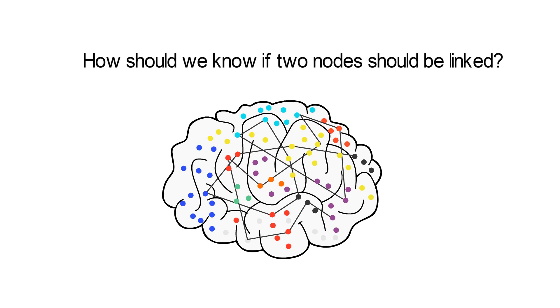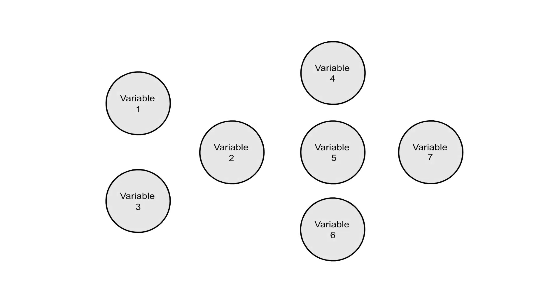How should we know if two nodes should be linked? More generally, given some variables of interest, how to model the interactions between the variables?